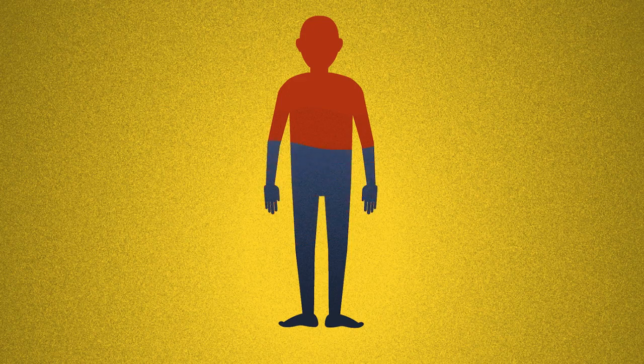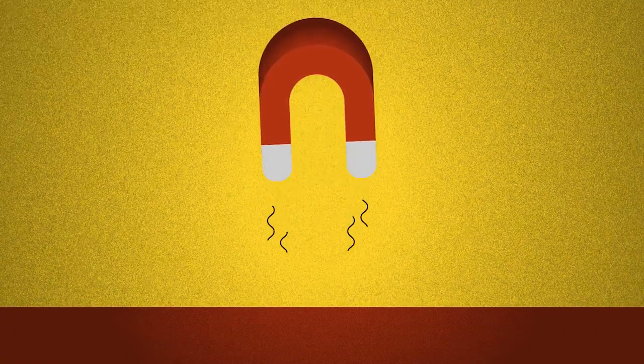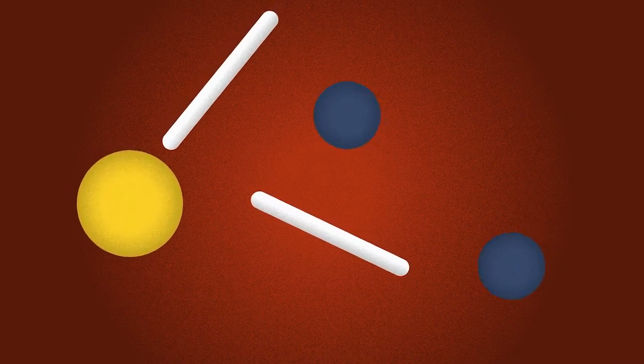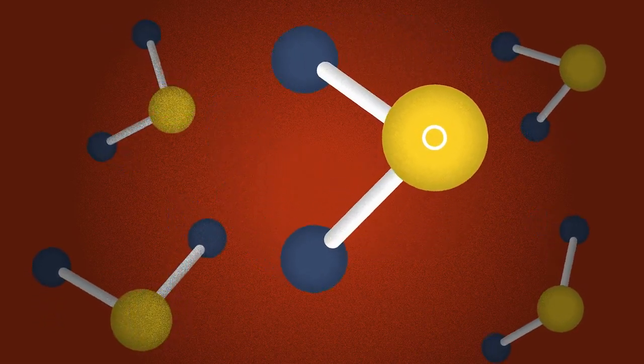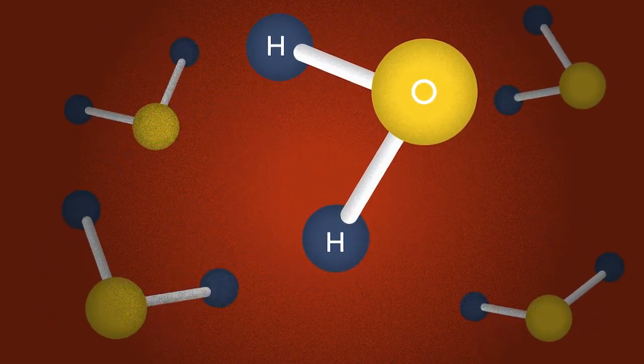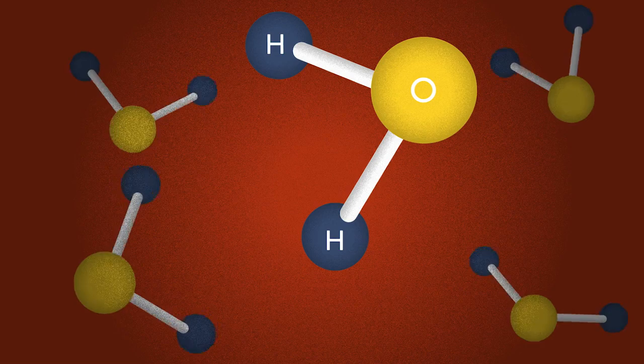Our bodies are made up of 60% water and water is magnetic. Each of the billions of water molecules inside us consists of an oxygen atom bonded to two hydrogen atoms. We know it as H2O.